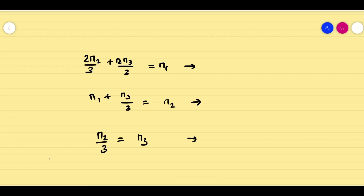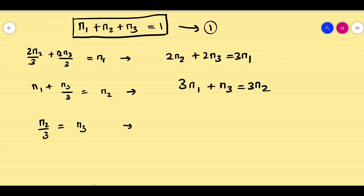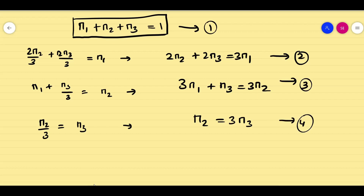Equating the matrix multiplication, we get three equations: Equation 2 — 2*pi_2 + 2*pi_3 = 3*pi_1; Equation 3 — 3*pi_1 + pi_3 = 3*pi_2; Equation 4 — pi_2 = 3*pi_3. Along with Equation 1: pi_1 + pi_2 + pi_3 = 1. Our aim is to find pi_1, pi_2, pi_3 using all four equations.